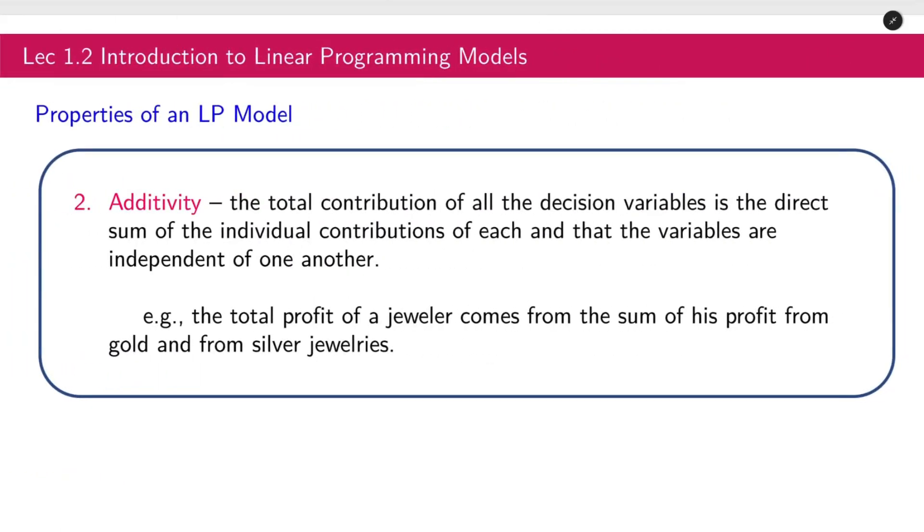Second, additivity. The total contribution of all the decision variables is the direct sum of the individual contributions of each and that the variables are independent of one another. For example, the total profit of a jeweler comes from the sum of his profit from gold and from silver jewelries.